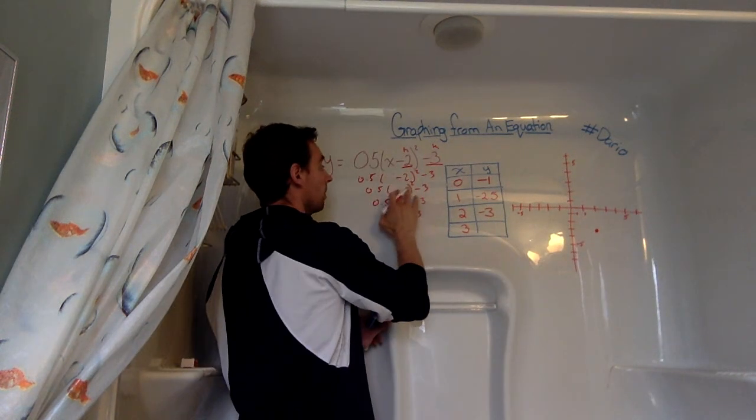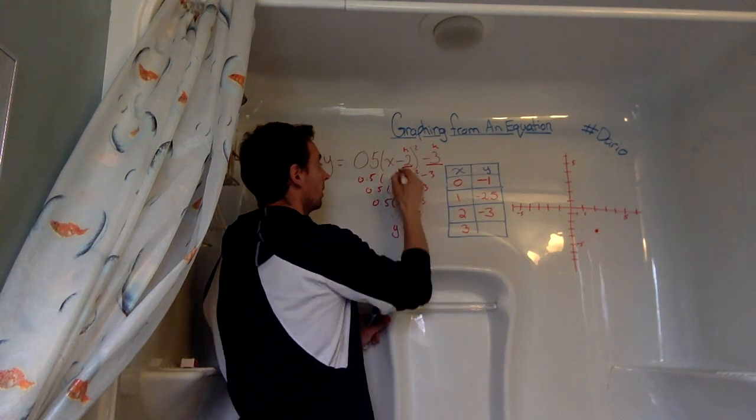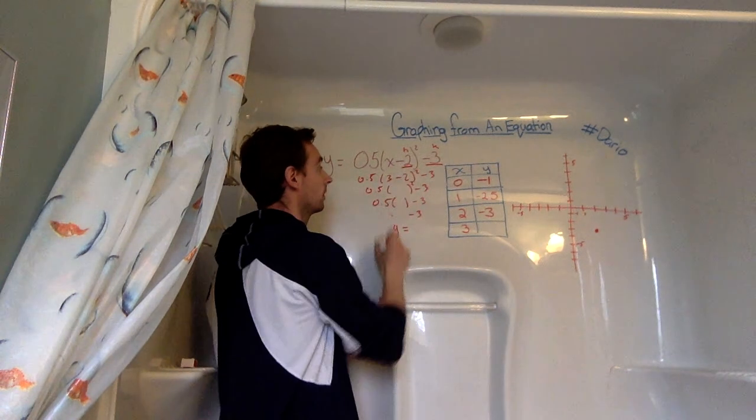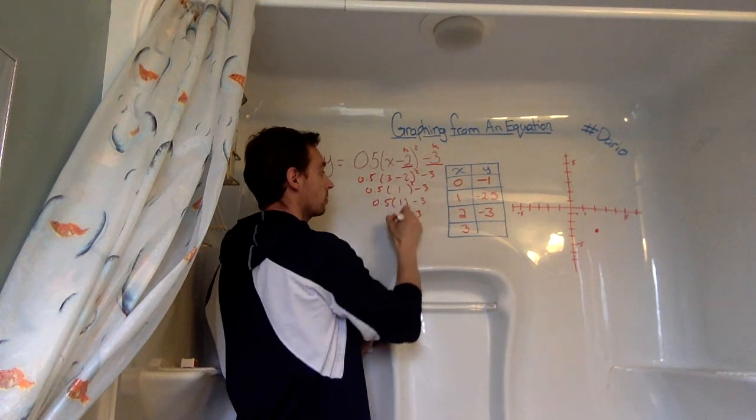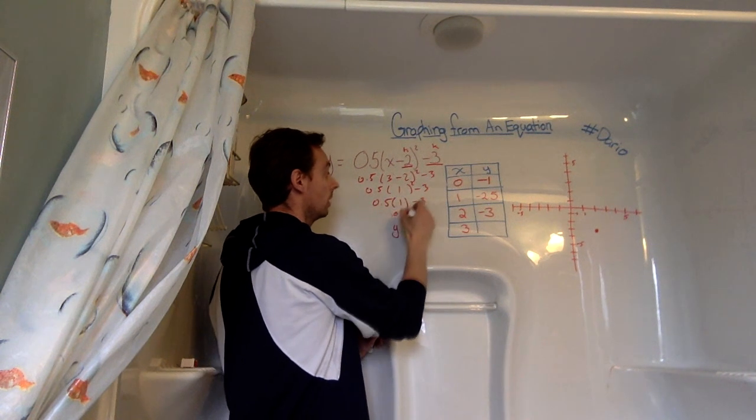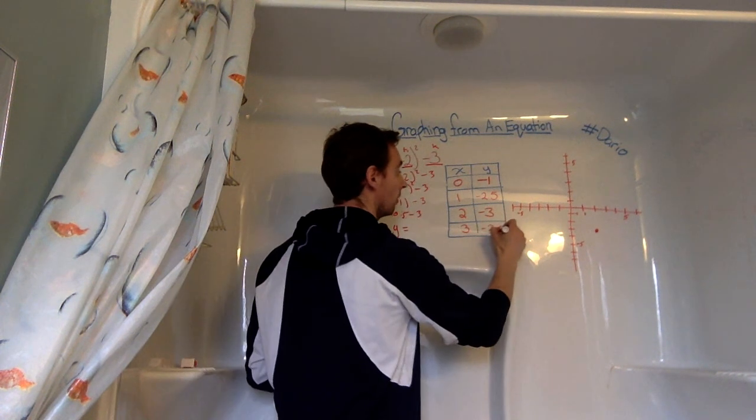And now we'll repeat one more time. For 3. 3 minus 2 is 1. 1 squared is 1. 0.5 times 1 is 0.5. Minus 3 gives us negative 2.5.